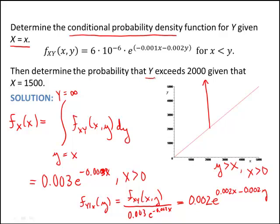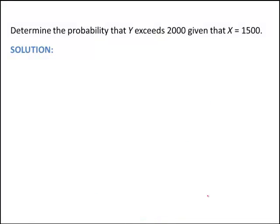Determine the probability that y exceeds 2,000 given that x is equal to 1,500. So let's find that probability using our now conditional probability density function for y given x. Let's go ahead to the next page to do that.